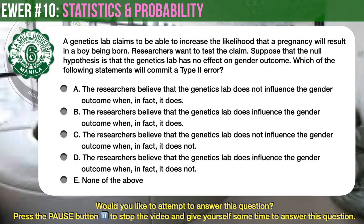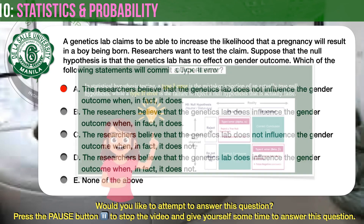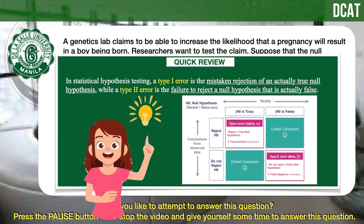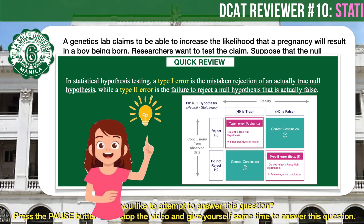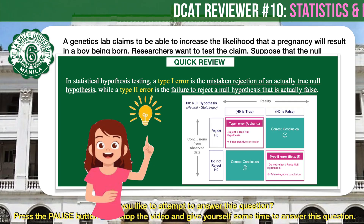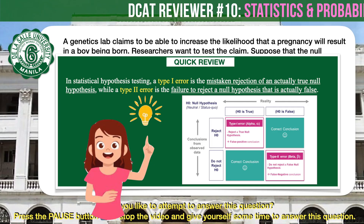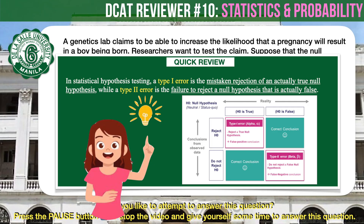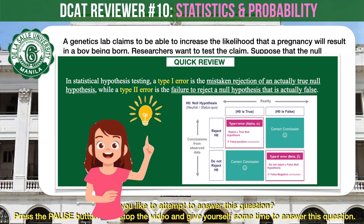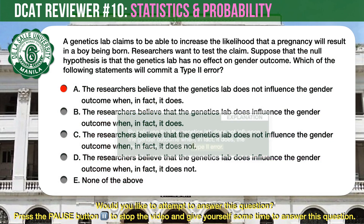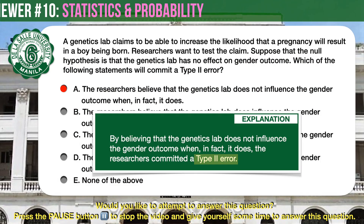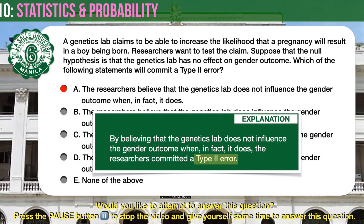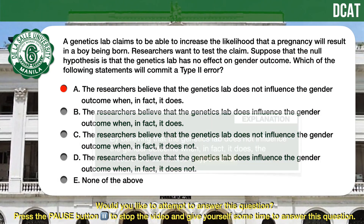The correct answer is A. In statistical hypothesis testing, a type 1 error is the mistaken rejection of an actually true null hypothesis, while a type 2 error is the failure to reject a null hypothesis that is actually false. By believing that the genetics lab does not influence the gender outcome when, in fact, it does, the researchers committed a type 2 error.